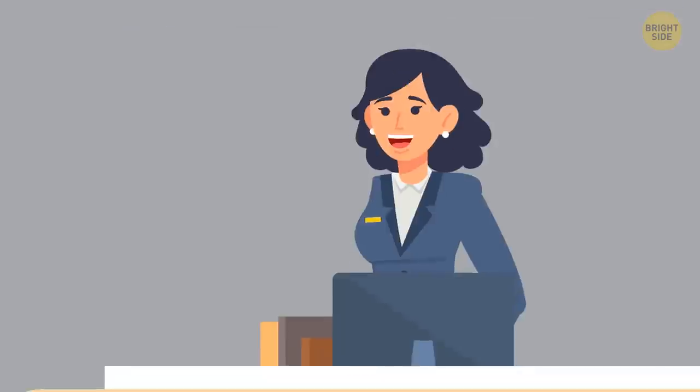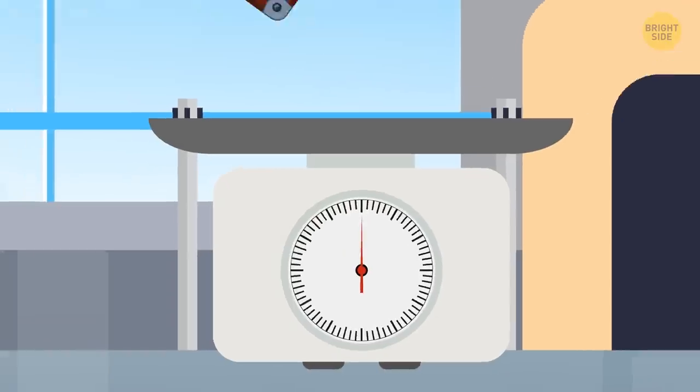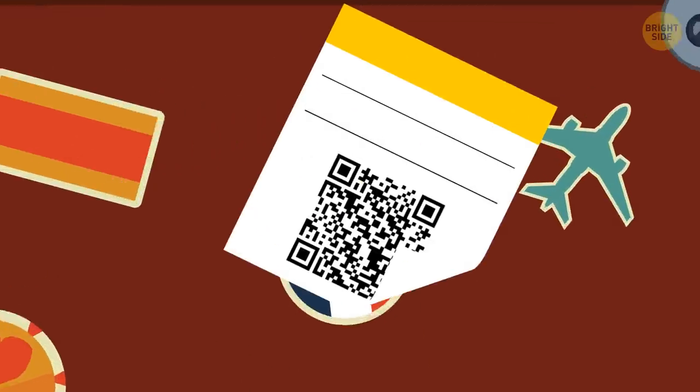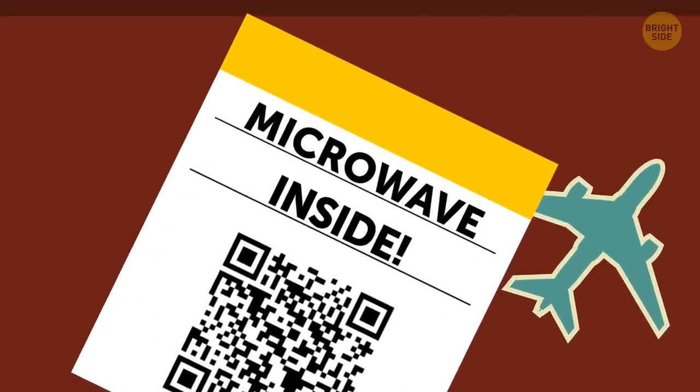You run through security and make it one minute before check-in closes. A friendly airline agent asks you to put your suitcase onto the scale and enters it into the baggage handling system. Your suitcase gets a tag with a unique 10-digit barcode. It has your flight information on it.